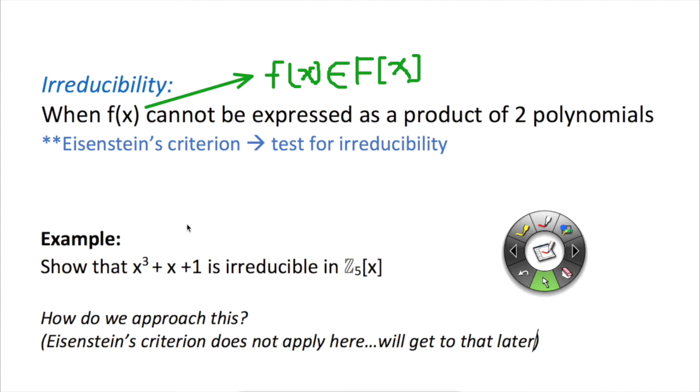So now, let's see a really quite simple but fundamental example. Show that x^3 + x + 1 is irreducible in Z mod 5 [x] polynomial ring. We automatically notice that the a_0 constant term is 1 and there is no prime number that divides 1, so Eisenstein's criterion would not apply here. So how can we approach this?